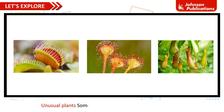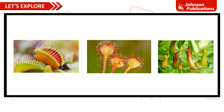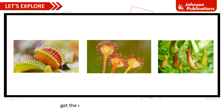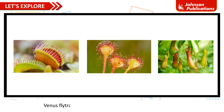Unusual plants. Some plants eat insects to prepare their food. Plants that grow in soil that is very poor in minerals, such as Venus flytrap and pitcher plant, get the minerals they need by eating insects. Examples: Venus flytrap, Sundew, Pitcher plant.